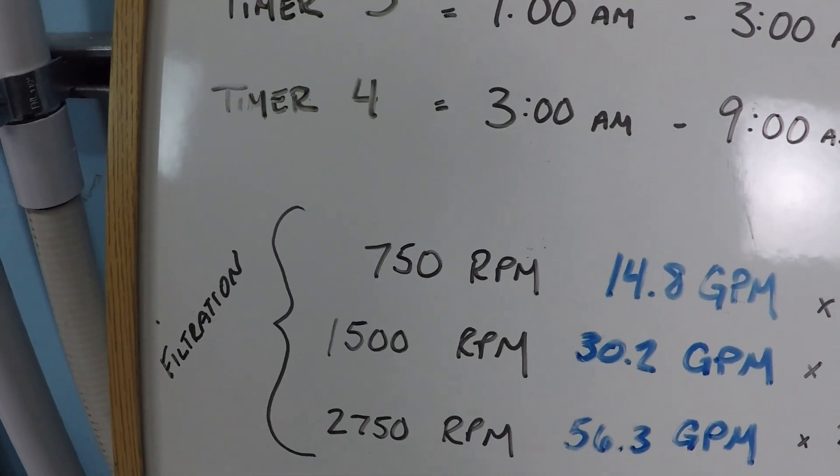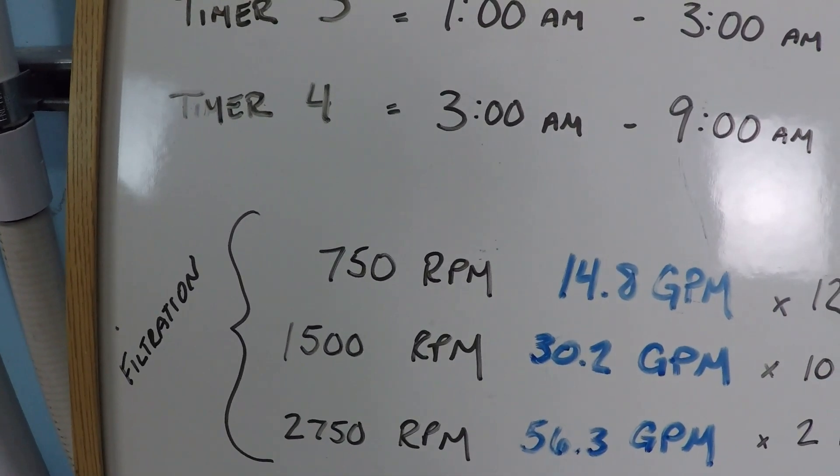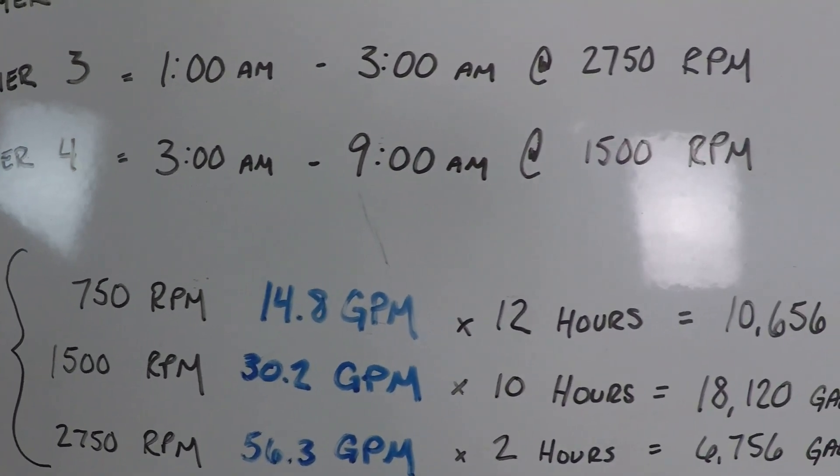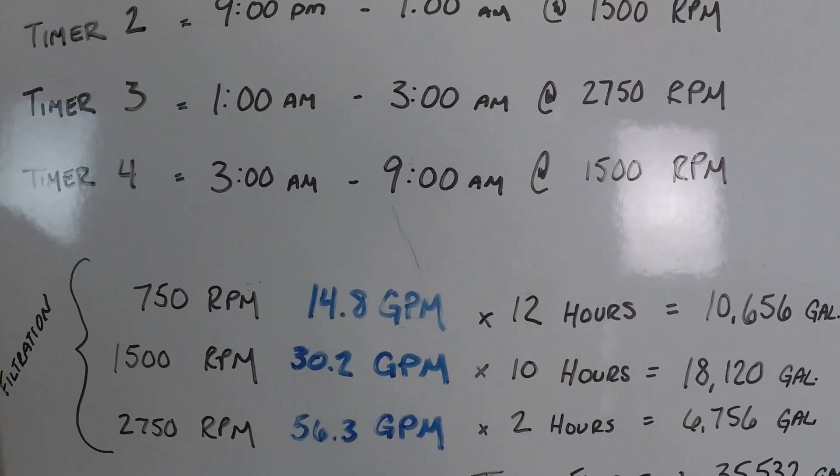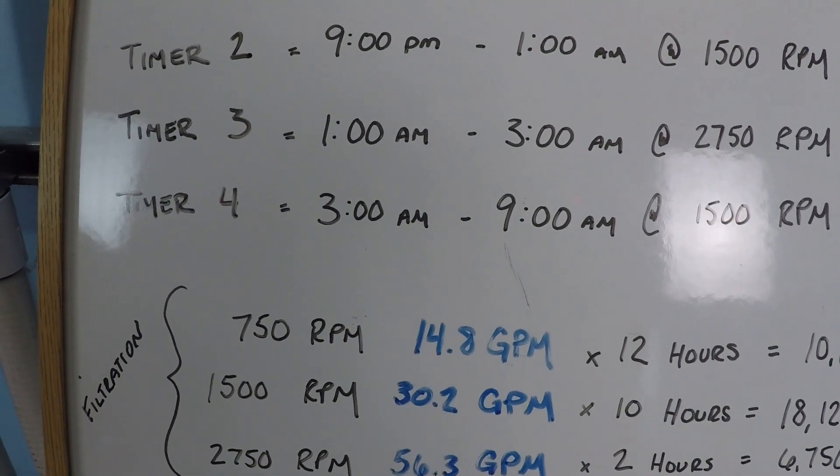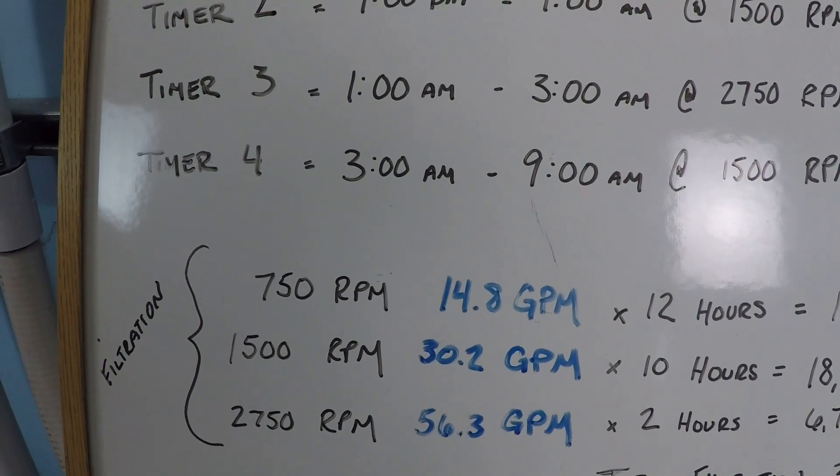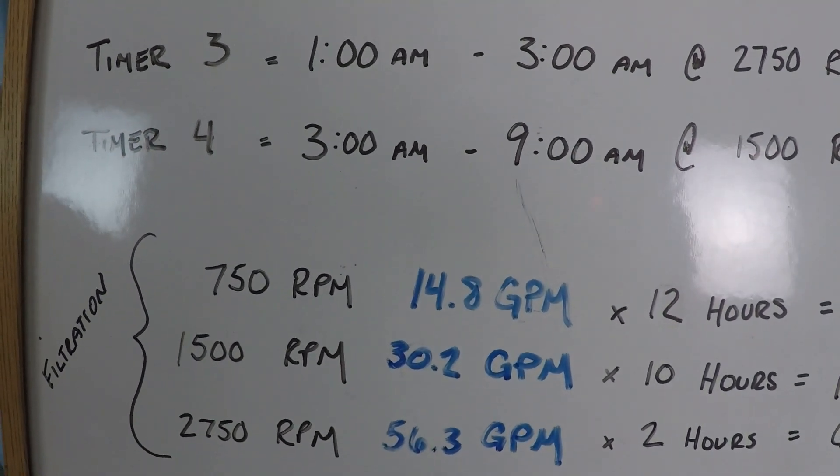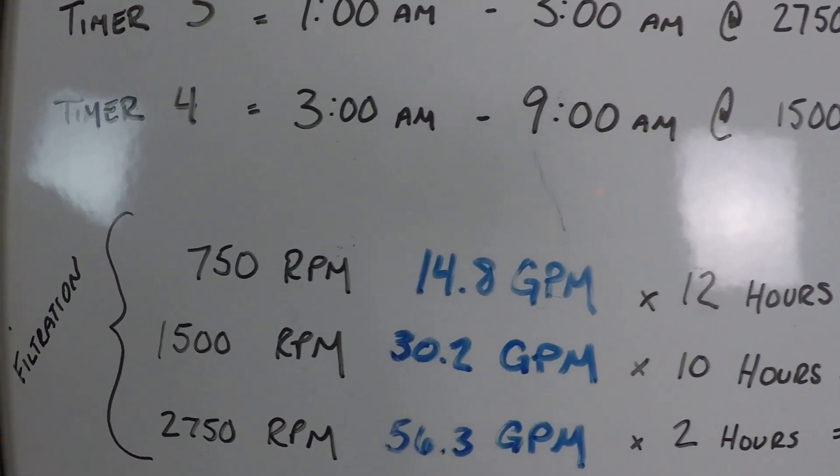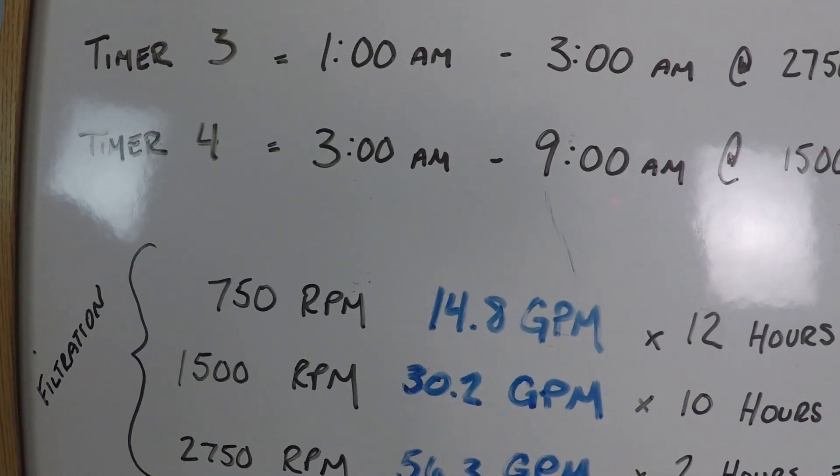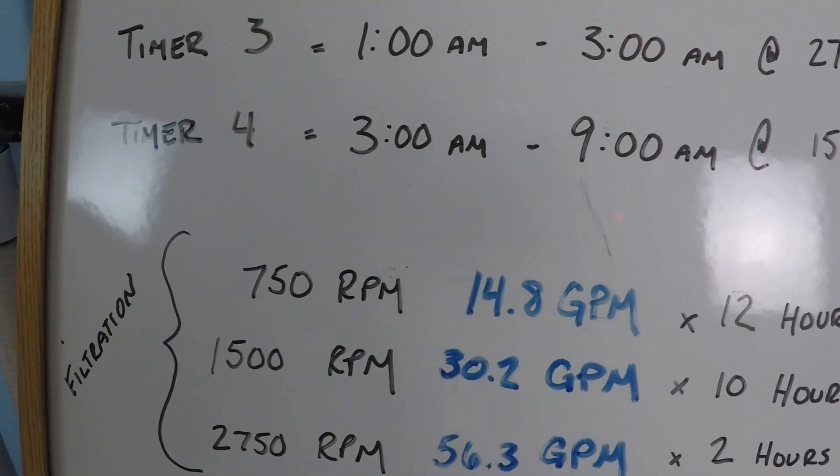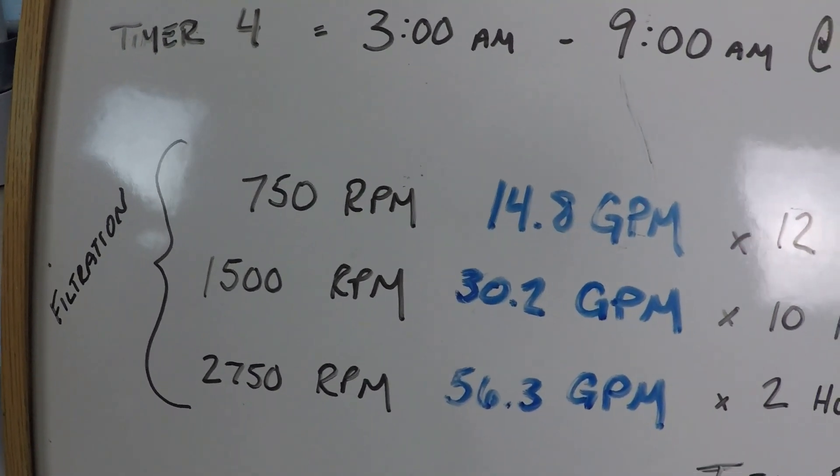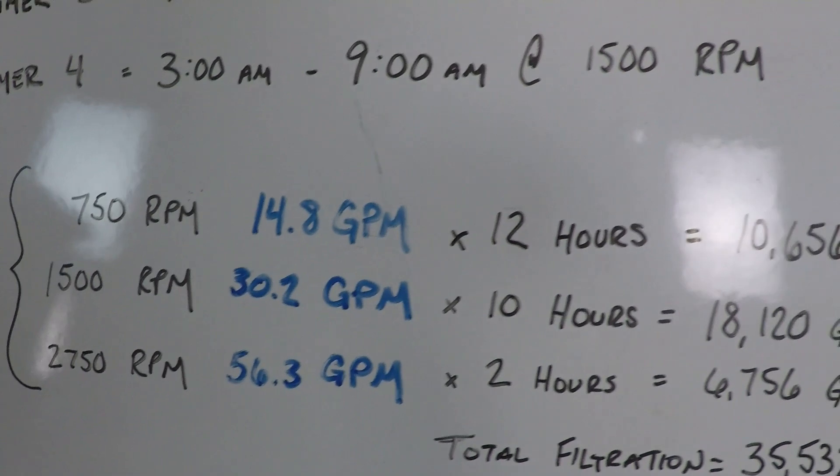Now, what I'm going to show you next is the amount of flow that you can get for these different rpm values. It is very significant to note that every swimming pool system is unique. This is what my system gets. Your system will get different values. But this gives us a starting point for comparison. So, as you can see, at 750, we're at just under 15 gallons per minute. 1500 is about 30 gallons per minute. And 2750 is about 56 gallons per minute.